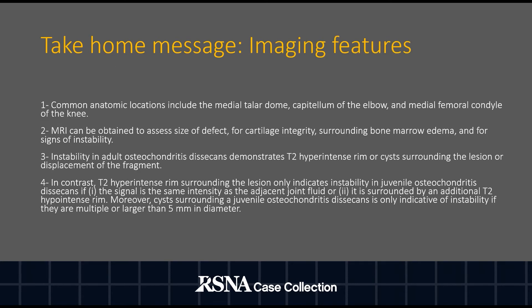For some take-home messages: the most common anatomic locations for osteochondritis dissecans include the medial talar dome, capitellum of the elbow, and medial femoral condyle of the knee. MRI can be obtained to assess the size of the defects for cartilage integrity, surrounding bone marrow edema, and for signs of instability.